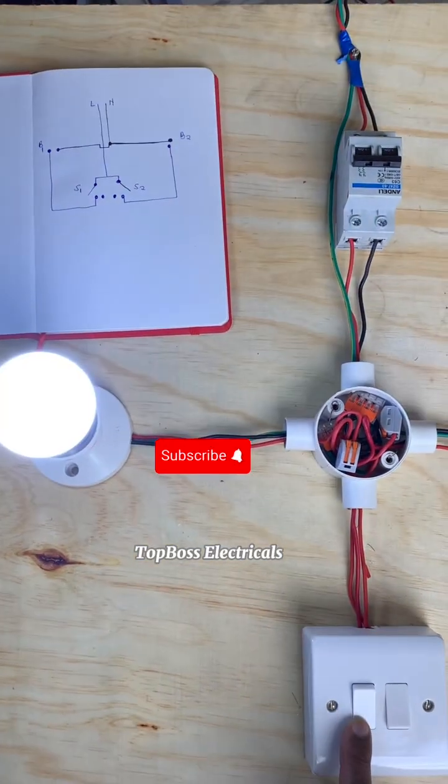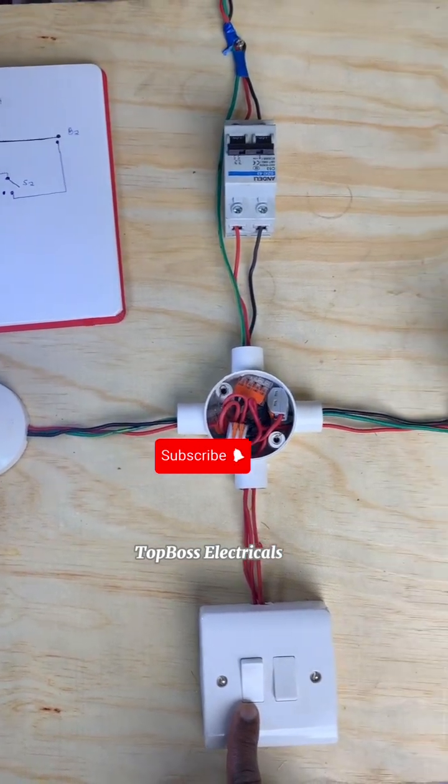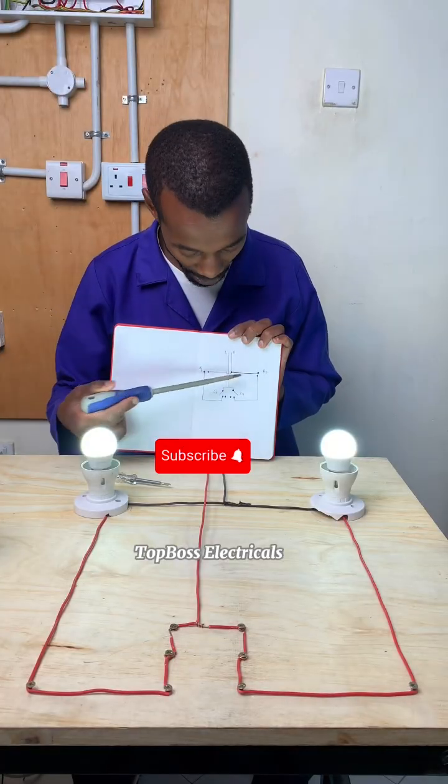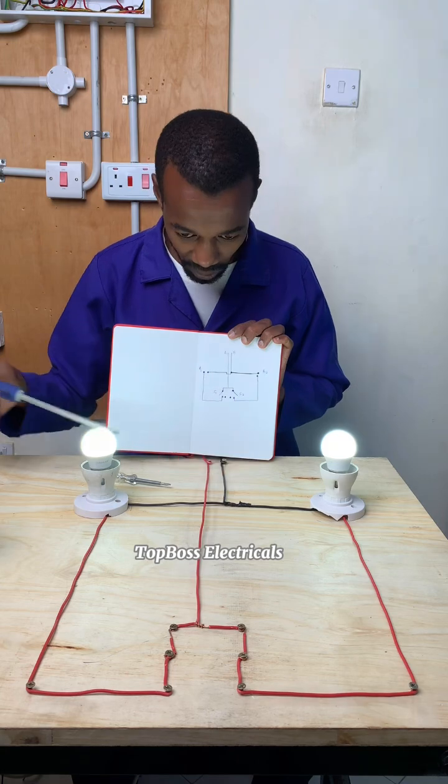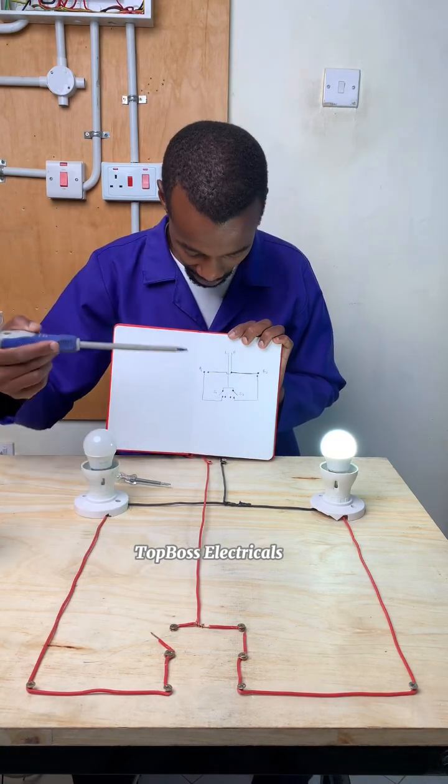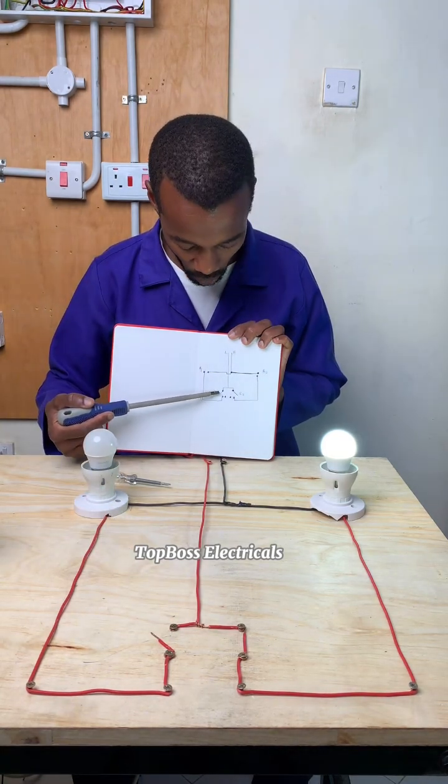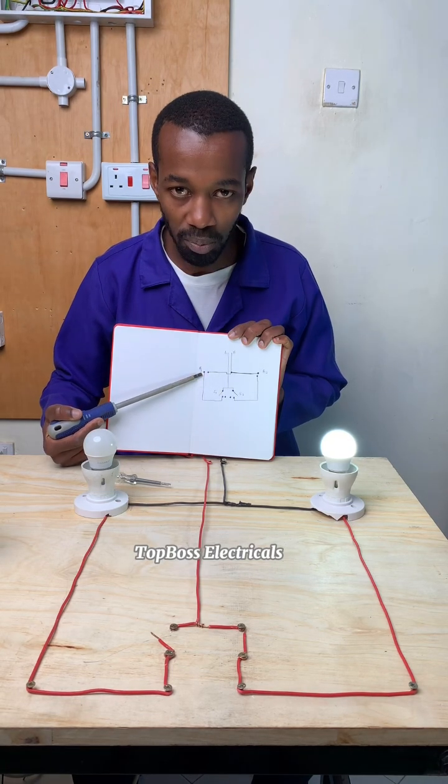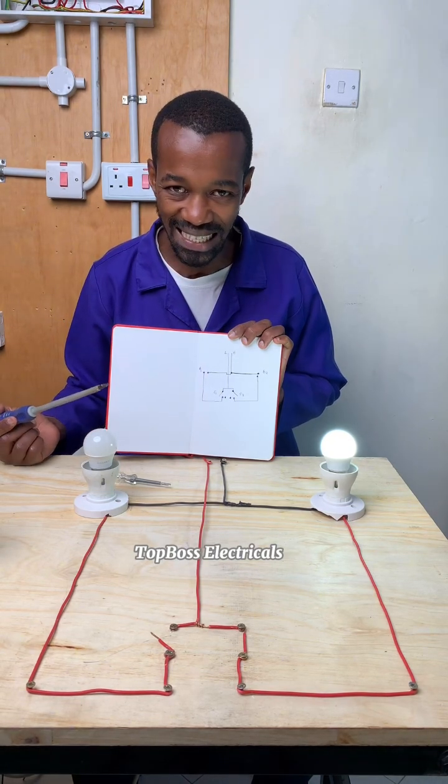We have the line going all the way and the neutral connecting the two bulbs. We have S1, which is this one at this point. If you disconnect S1, only bulb one does not get the supply of current.